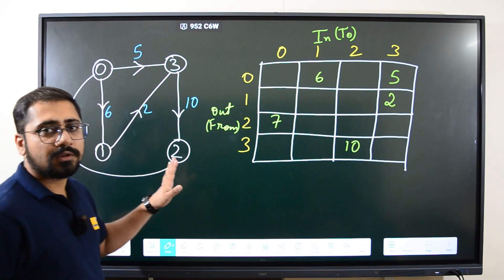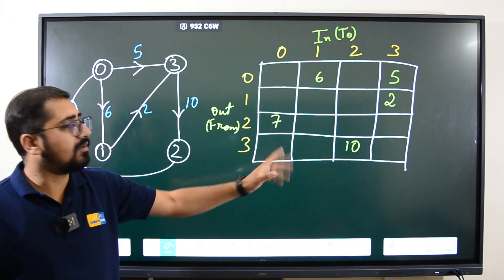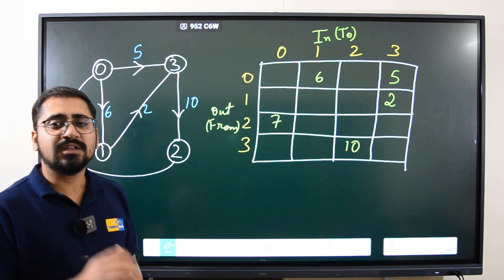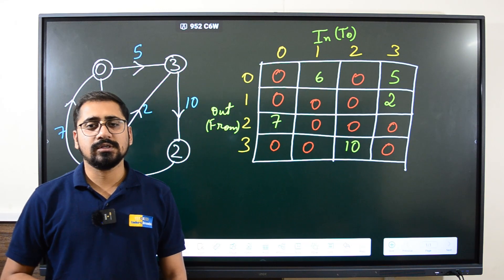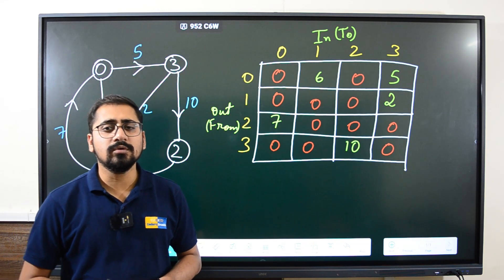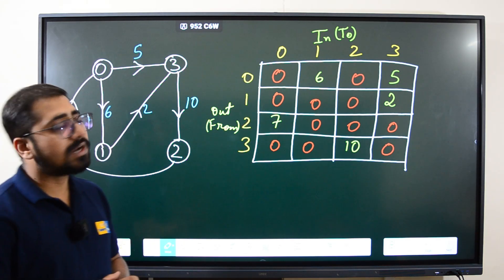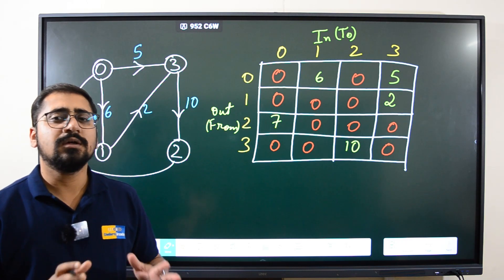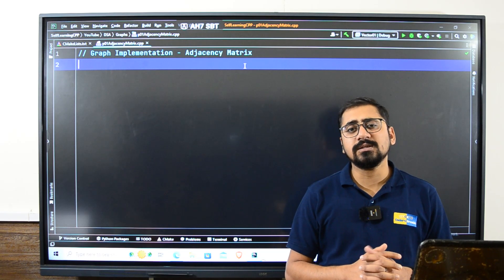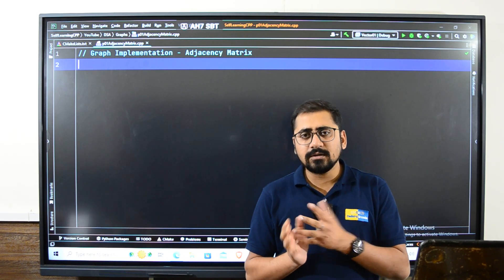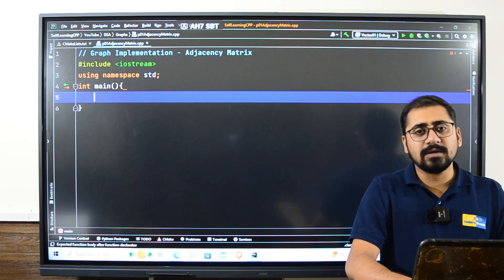We had five different edges, so five cells are filled with the weights. All other cells are marked as zero. This is how we do the implementation of a graph using the adjacency matrix method. Now let's write a program to see the implementation. For adjacency matrix implementation of graphs, we need a two-dimensional array.